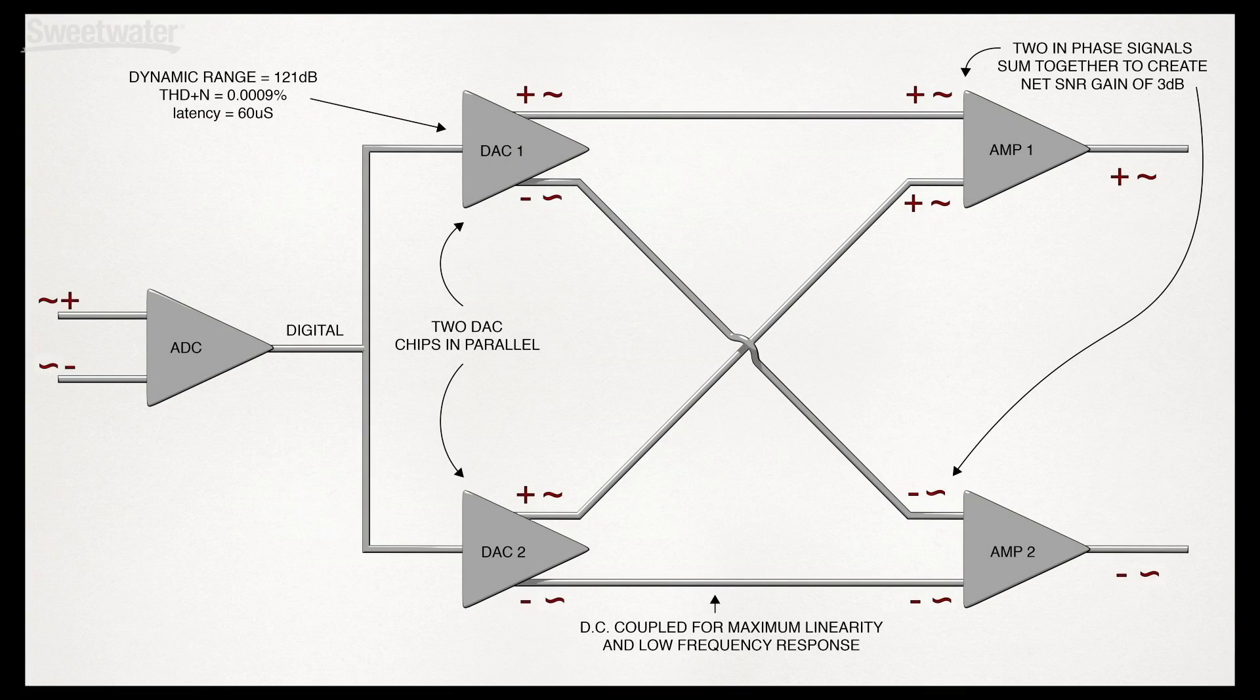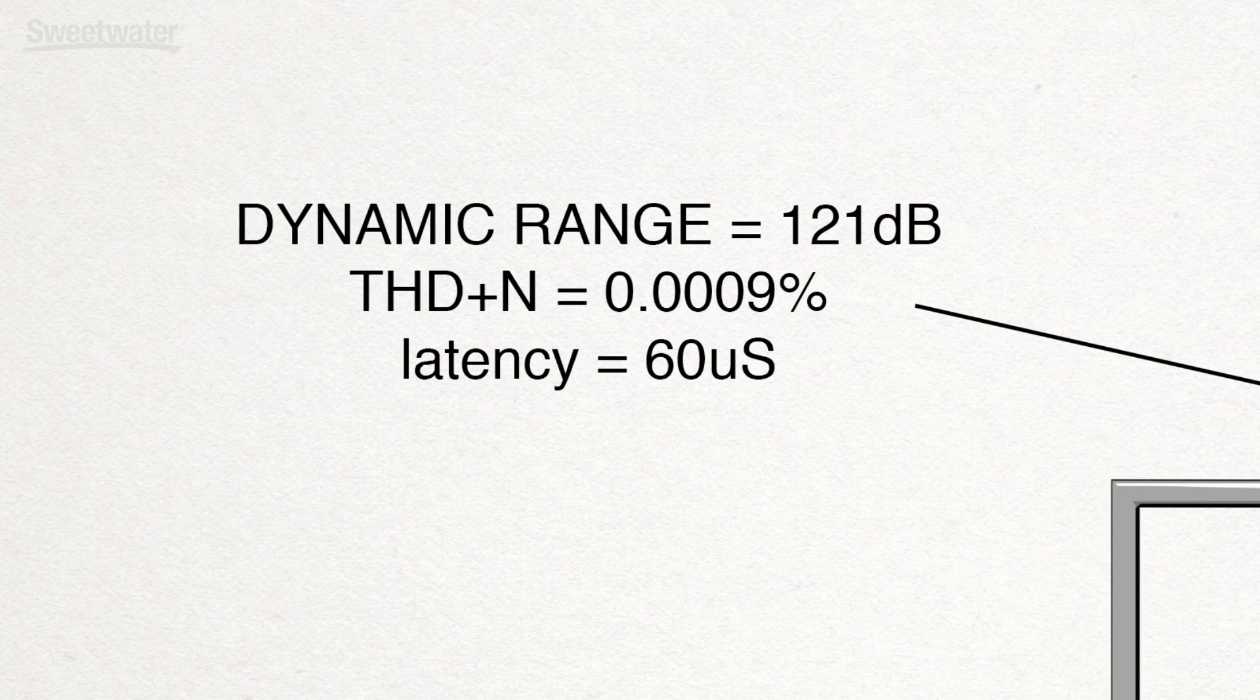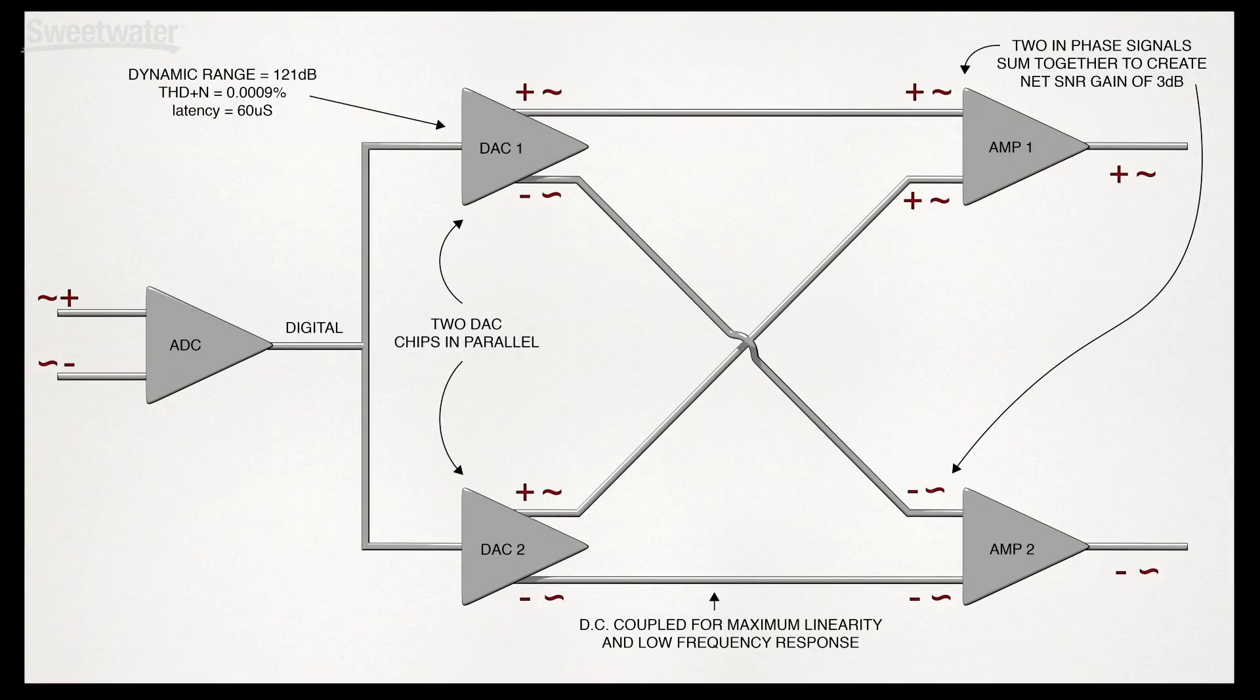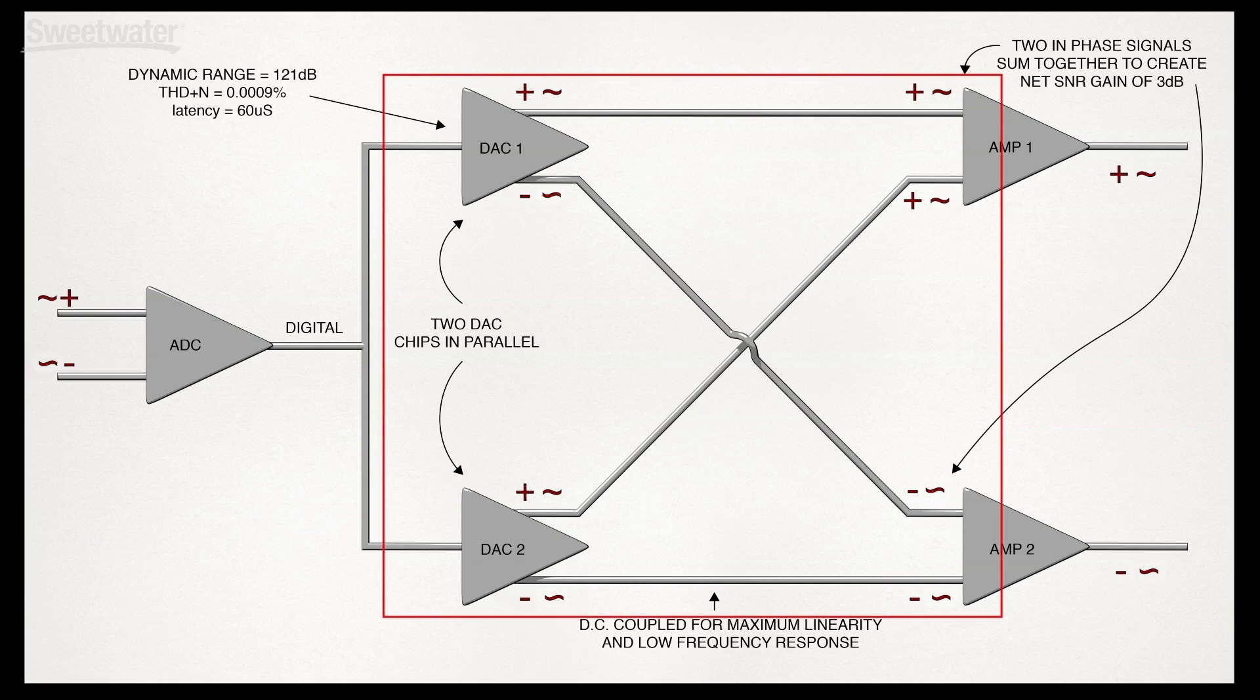The last stage of the audio signal path is the DAC, and we use the same approach used for the ADC. Our choice of converter is focused on three criteria: wide dynamic range, low distortion and low latency. To achieve this specification, the signal path uses parallel path summing.